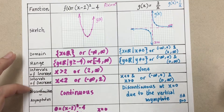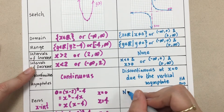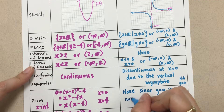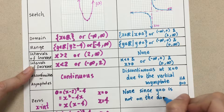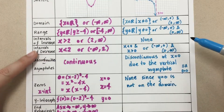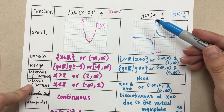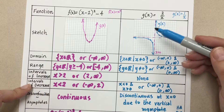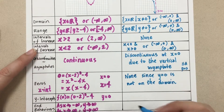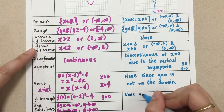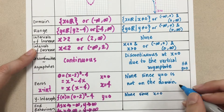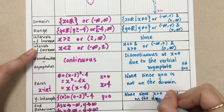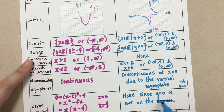For zeros, looking at our function, there is a horizontal asymptote at y = 0, so this function will never have any x-intercepts. Therefore the zeros are none, since y = 0 is not in the range. For y-intercepts, there is a vertical asymptote on the y-axis where x = 0, so this function will never have any y-intercepts either. Again, none, since x = 0 is not in the domain.